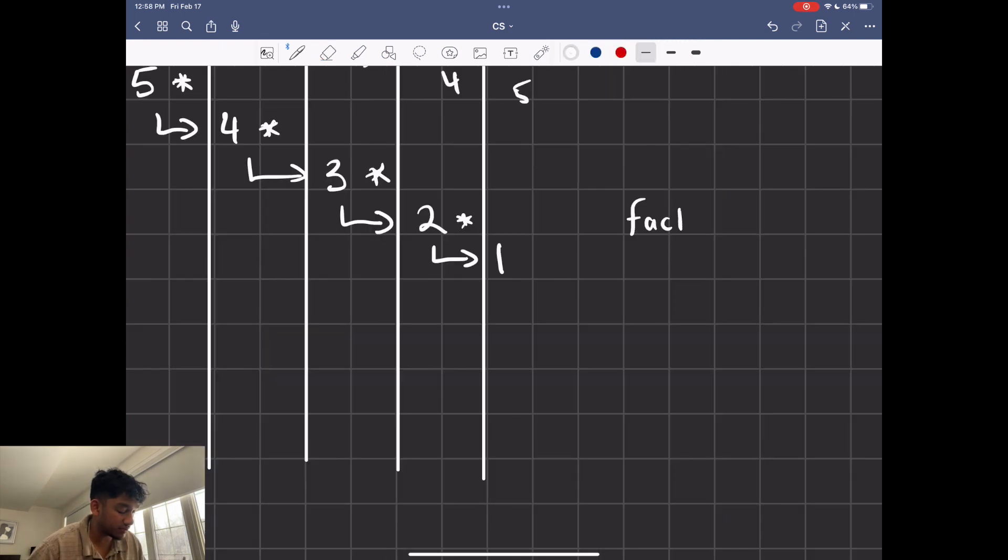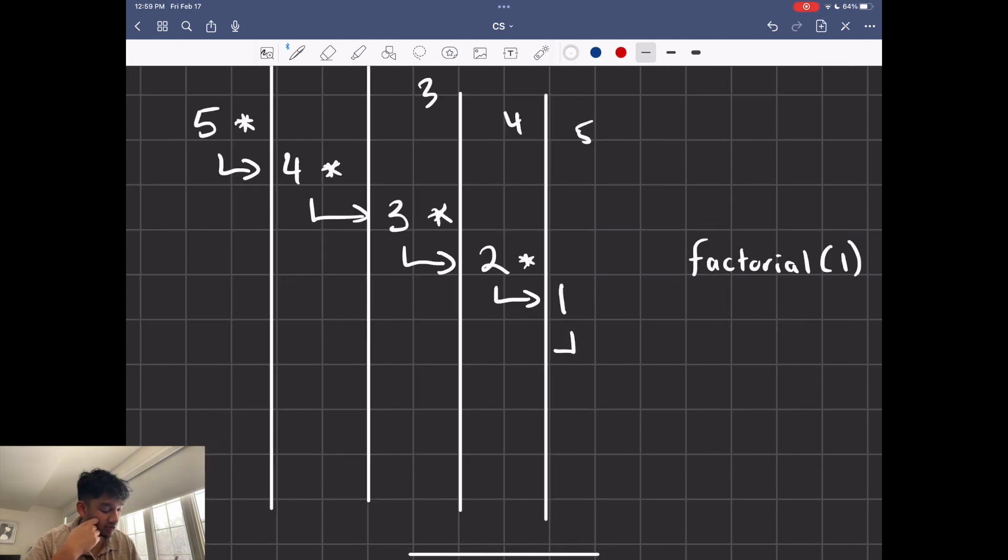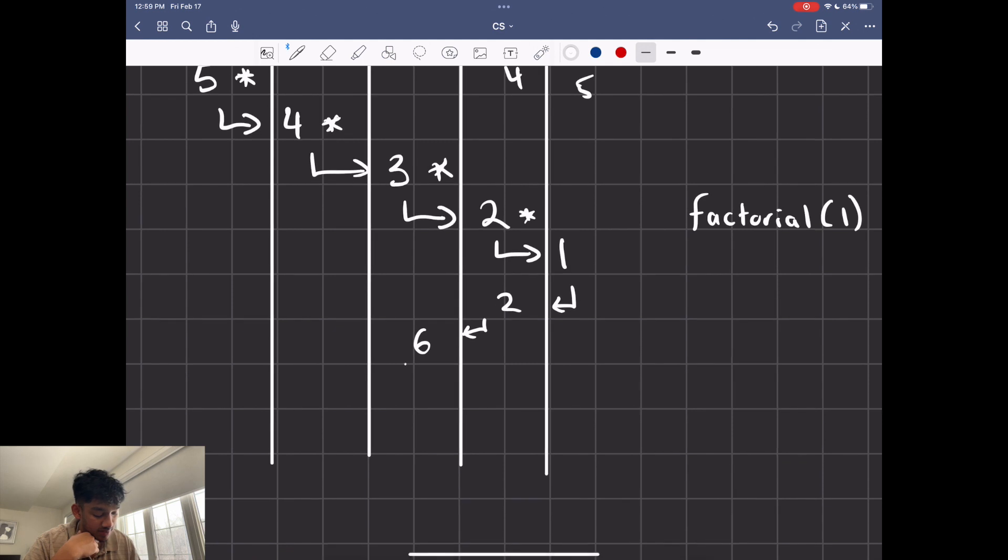Because think about it, when you're calling factorial 1, the function itself has no idea what you called before it. All it knows is the argument that you gave, which is 1. When this is returned back into that last function, we're going to have 2 times 1, so just 2. That's going to be returned to this, which is going to be 6 because 2 times 3 is 6. Then we multiply that into 4, so we get 24 here.